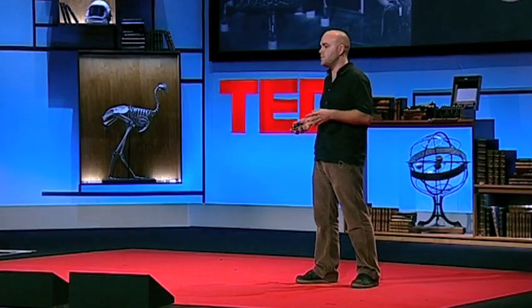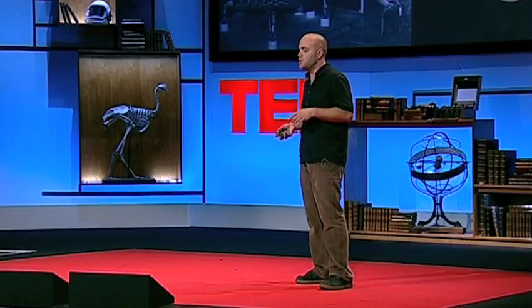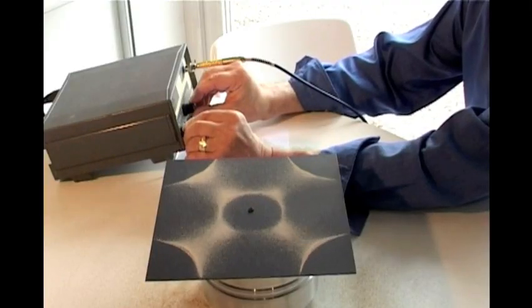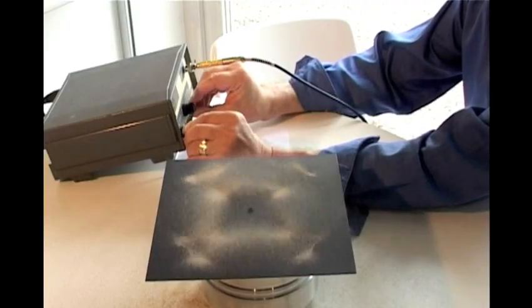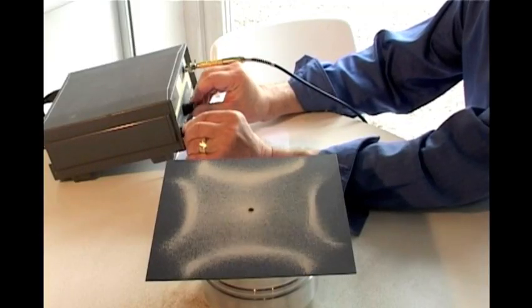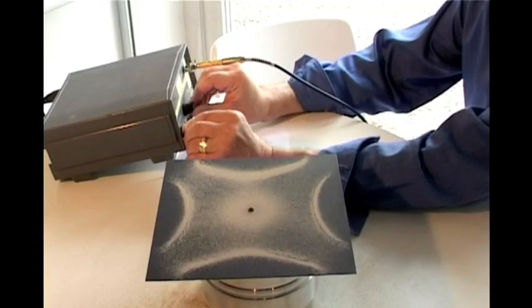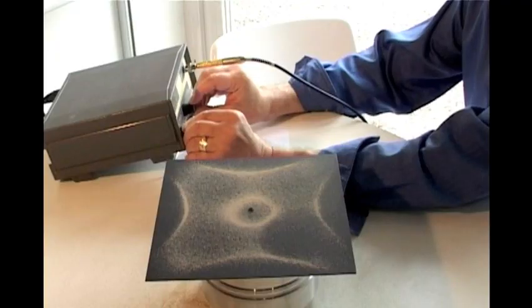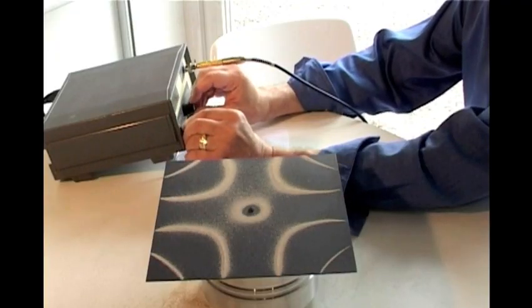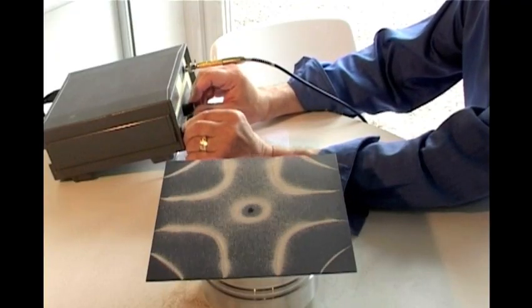Bringing us into the present day is a fellow collaborator of mine and cymatics expert John Stewart Reid. He's kindly recreated for us the Chladni experiment. What we can see here is a metal sheet connected to a sound driver and being fed by a frequency generator, and as the frequencies increase so do the complexities of the patterns that appear on the plate.